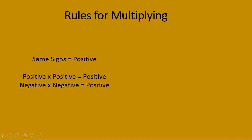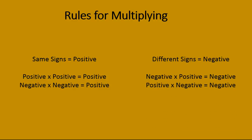So the rules for multiplying: if it's the same sign, it's going to be a positive result. In other words, positive times positive — like a good guy coming — is a good thing. And negative times negative — like a bad guy leaving — is a good thing as well, giving a positive result. When the signs are different, it's a negative. So a negative times a positive, like a negative person coming to your house, is a negative. Or a positive times a negative — a good person leaving — would be considered a negative as well.